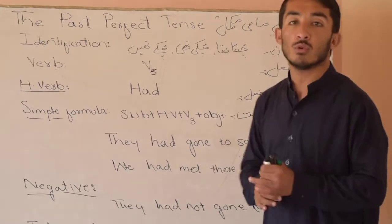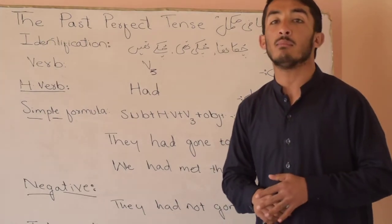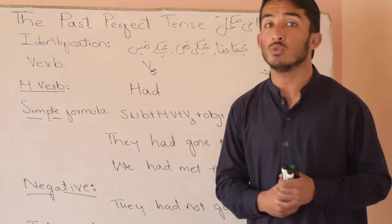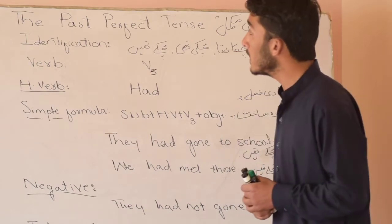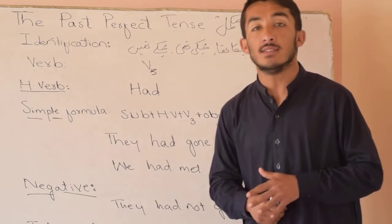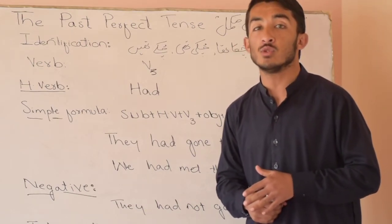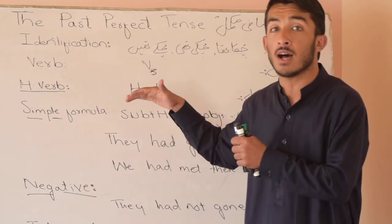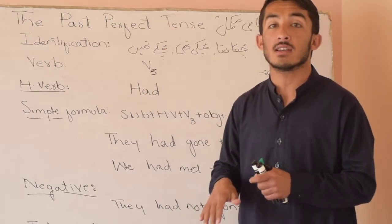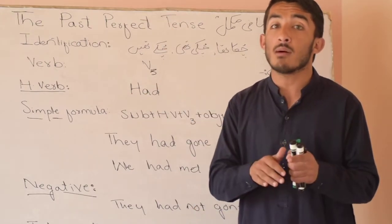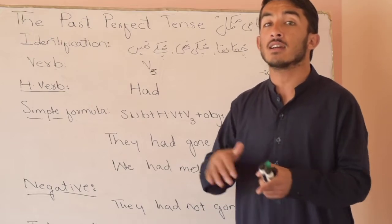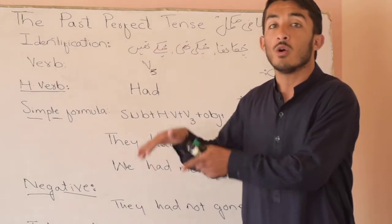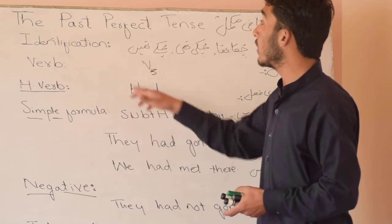Past perfect tense ko hum Urdu mein 'fail maazi mukamal' kehte hain. This tense is used for all those actions which started in the past and completed in the past. Is tense ko hum maazi ke un arkaat ke liye istimal karte hain jo maazi mein shuru huye aur maazi mein khatam bhi ho gaye.